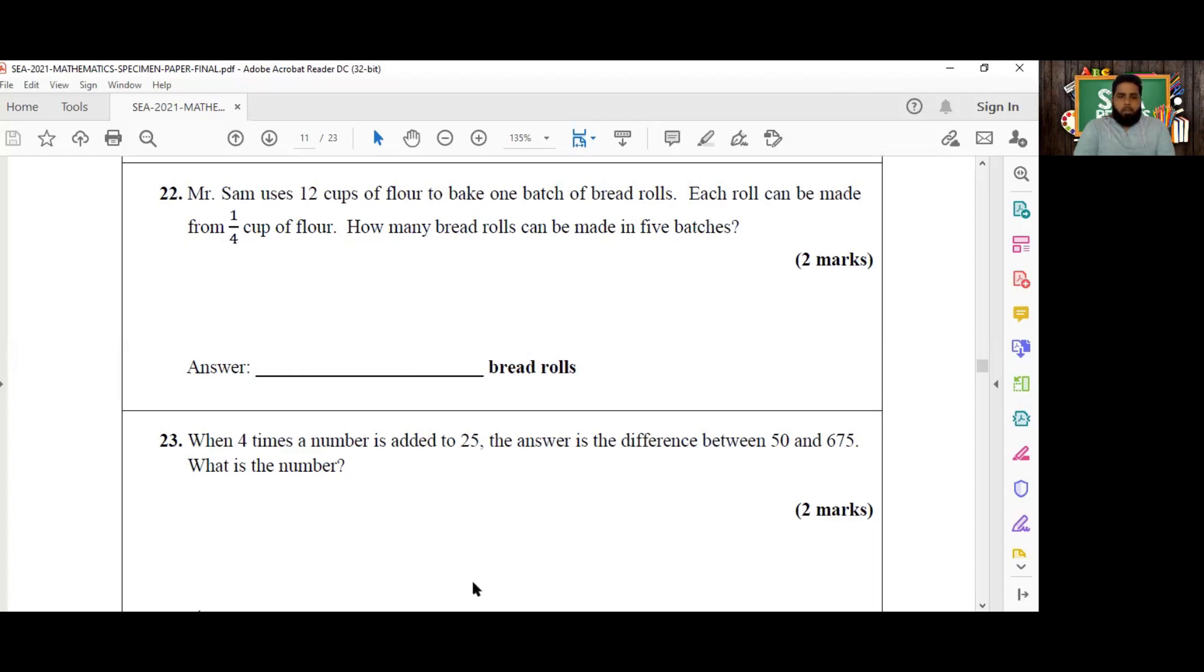So he uses 12 cups of flour to make one batch of bread rolls, and each roll can be made from one quarter cup of flour. So if one quarter cup of flour makes one roll, therefore one cup of flour is going to make four rolls. And 12 cups of flour makes one batch. So therefore, one batch will be equal to 12 times 4. So we multiply the 12 cups of flour by four rolls, and we're going to get 48 rolls per batch.